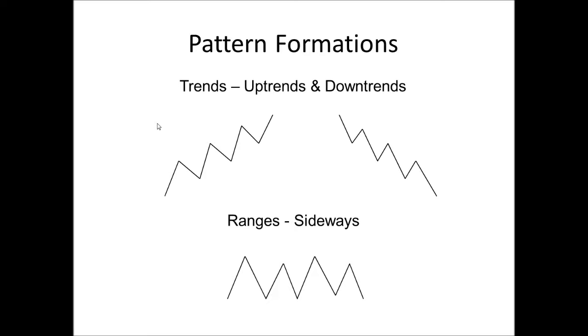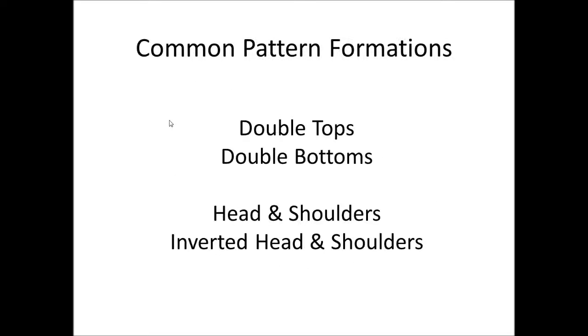In previous videos, we have looked at market types and how price behaves when it uptrends, downtrends, and when it moves in a sideways direction. For example, price can be uptrending but soon be downtrending, or price can be in a downtrend and soon become a range. Uptrends, downtrends, and ranges do not last forever. Price changes direction and when these changes happen, recognizable patterns are created by price.